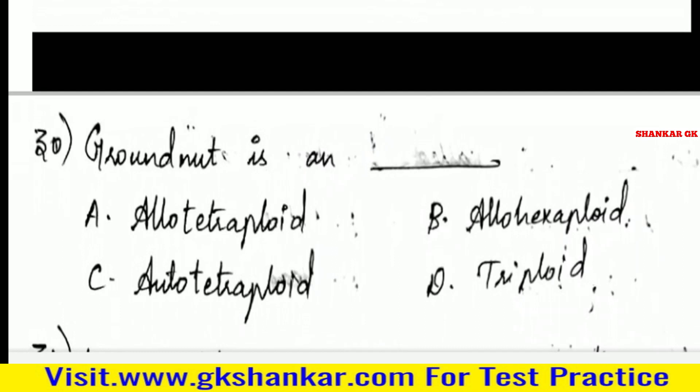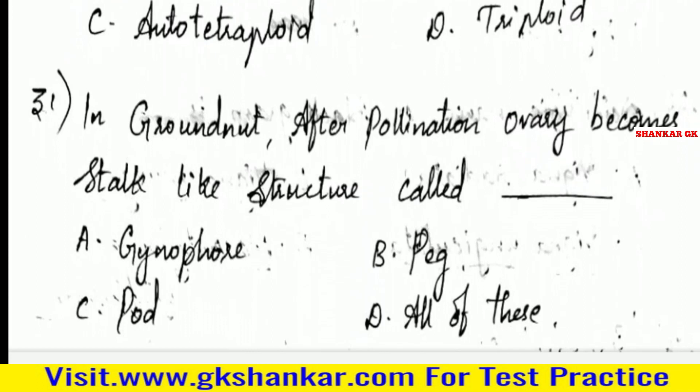Twenty-ninth question: Groundnut is — A. Allo tetraploid, B. Allo hexaploid, C. Auto tetraploid, D. Triploid. Answer: A. Allo tetraploid.